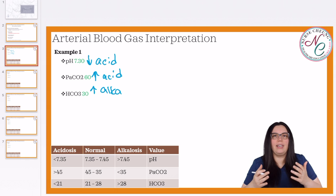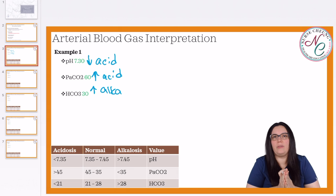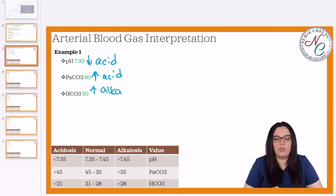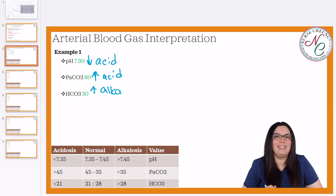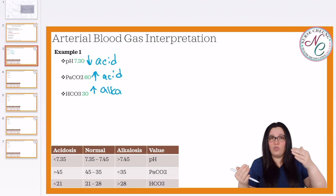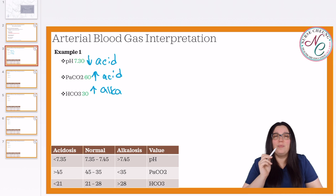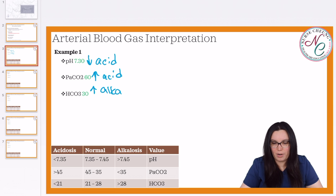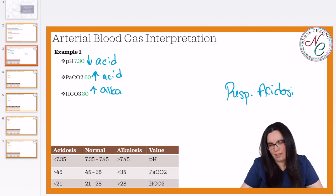We begin by looking at what is happening with our ABG. Is it a respiratory component or is it a metabolic component? Our pH is low — 7.30 — so it's acidic. Our PaCO2 is high, which also means acid. Our HCO3 is high, but that makes it more alkalotic. We've got two competing systems trying to fix each other, but we have to match it to our pH. If our pH is acidic and our PaCO2 is acidic, we know that it is a respiratory acidosis taking place inside the body.